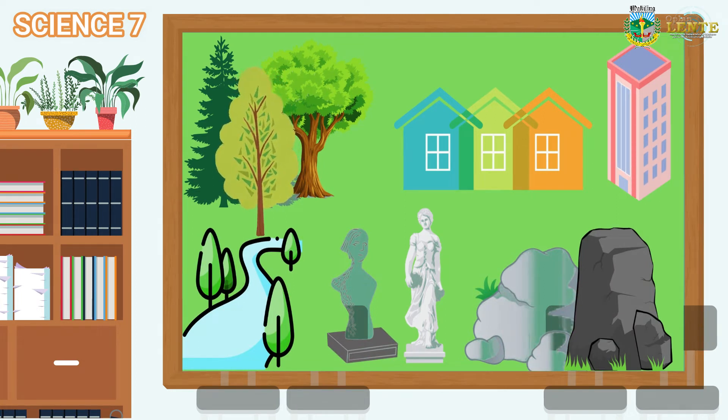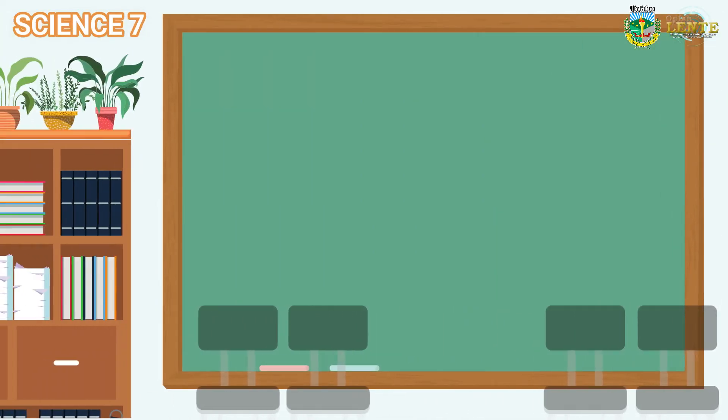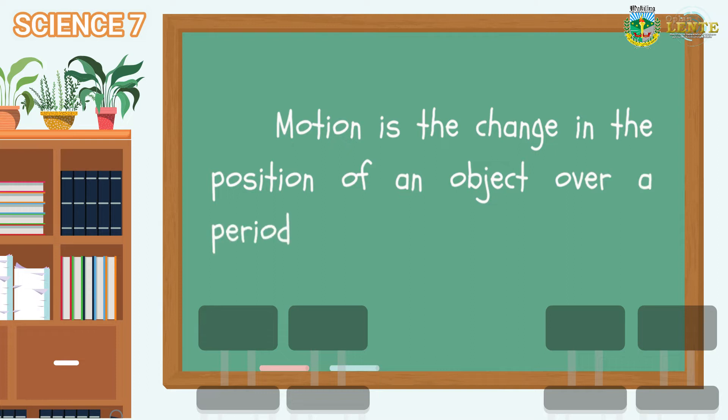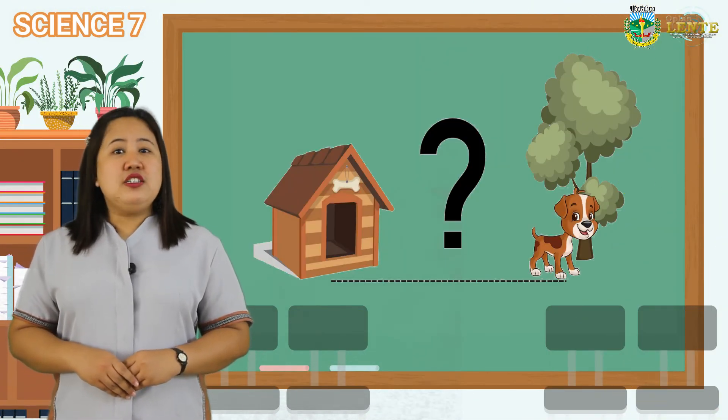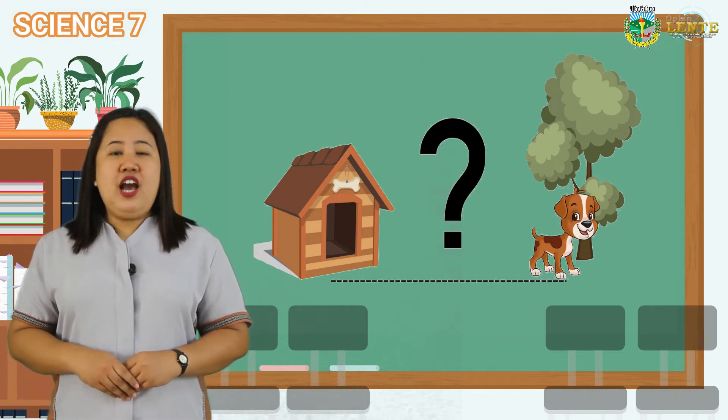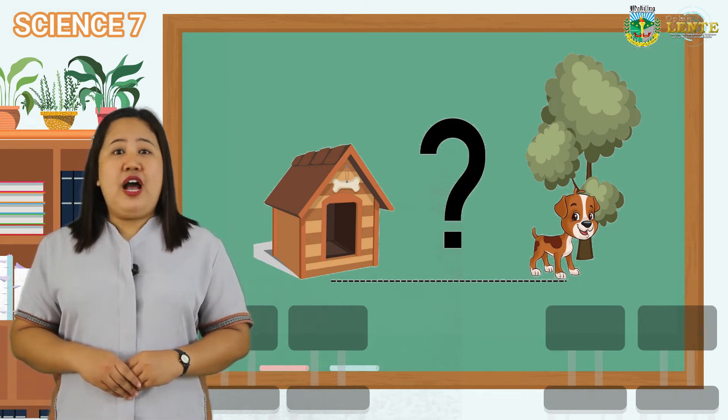We can now define what motion is. Motion is the change in the position of an object over a period. Now, let's try to describe motion by determining how far an object goes throughout its travel.